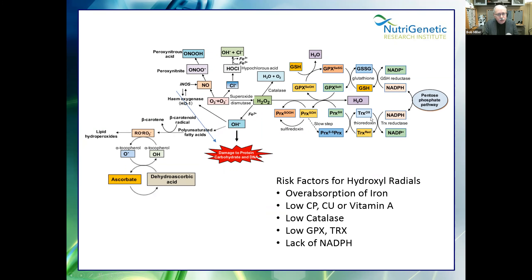Low catalase, compromised glutathione or thioredoxin also contribute. NADPH — please listen to webinars one and two to learn about it — takes your oxidized glutathione and turns it back to reduced, and takes your oxidized thioredoxin back to reduced. Without enough NADPH this doesn't work effectively, and the Fenton reaction occurs. In my first study on Lyme disease, which won the research award in Helsinki, Finland in 2016, we showed that those with chronic Lyme disease had five times more likelihood of having genes that cause them to over-absorb iron.